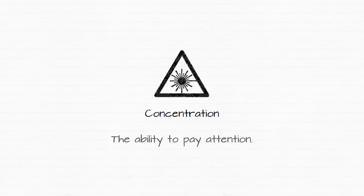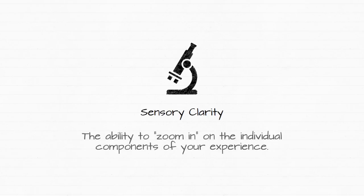Sensory clarity is the ability to zoom in on the individual components that make up your experience. Instead of feeling angry, for example, you learn to track the mental images, the mental talk, and the emotional body sensations that make up this thing we call angry. By detangling this experience, you can learn to manage it much better. And weirdly enough, you'll find that not only does this zooming in make unpleasant experiences less overwhelming, but it also makes pleasant experiences more satisfying.